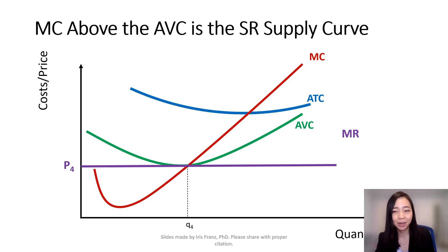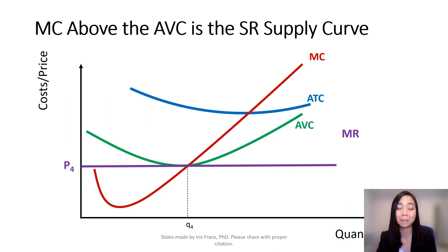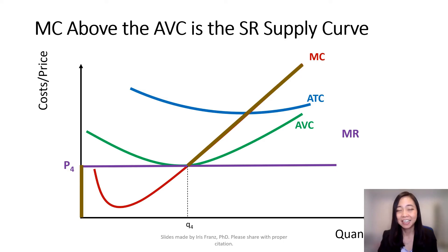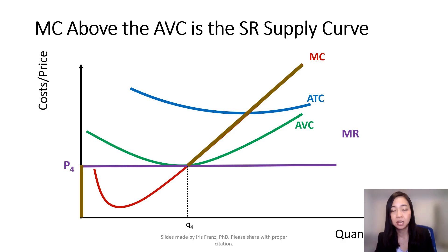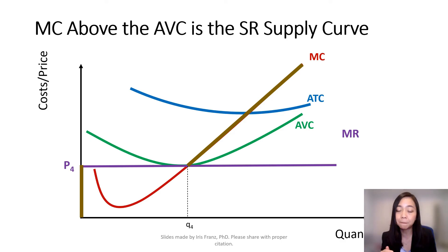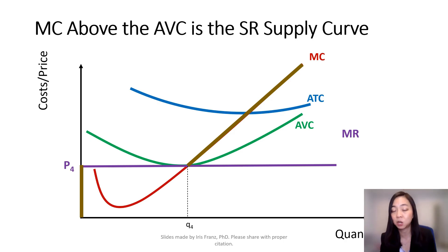But if the price continues to drop, you should not produce any more. You should produce zero if the price goes below P4. Therefore, your supply curve looks like this brown line. Your supply curve covers a part of your marginal cost curve — in particular, the part of the marginal cost curve that is above the average variable cost. And if the price continues to drop below P4, then you will produce zero.